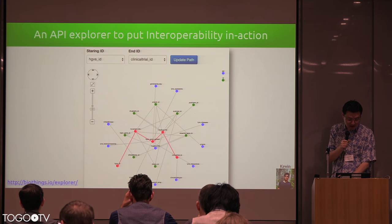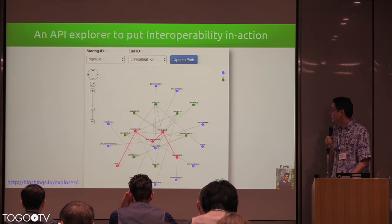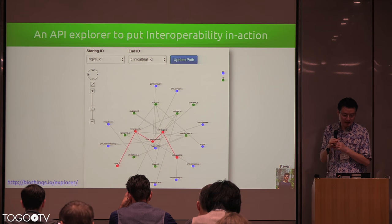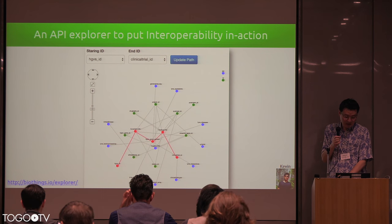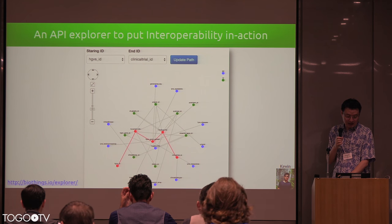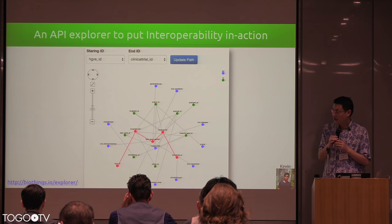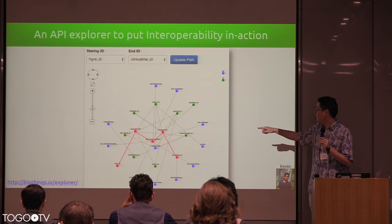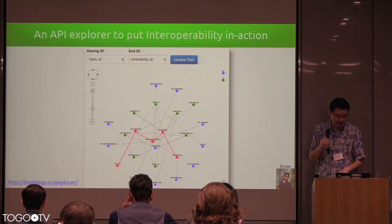Finally, Kevin developed a so-called API Explorer. That takes all the metadata we've aggregated and puts the API interoperability actually into action. For example, if I have a variant ID and want to get the associated clinical trial ID, I have to go through a few APIs — from variant, eventually getting to the associated clinical trial. That's basically the idea.